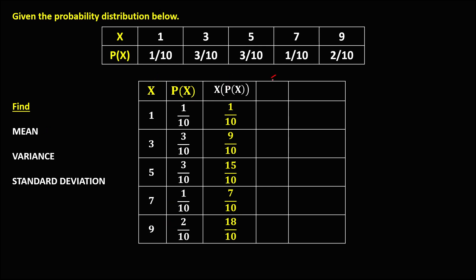For the next column, we have the square of x, so we just take the square for each value. The square of 1 is 1, the square of 3 is 9, the square of 5 is 25, the square of 7 is 49, and the square of 9 is 81.